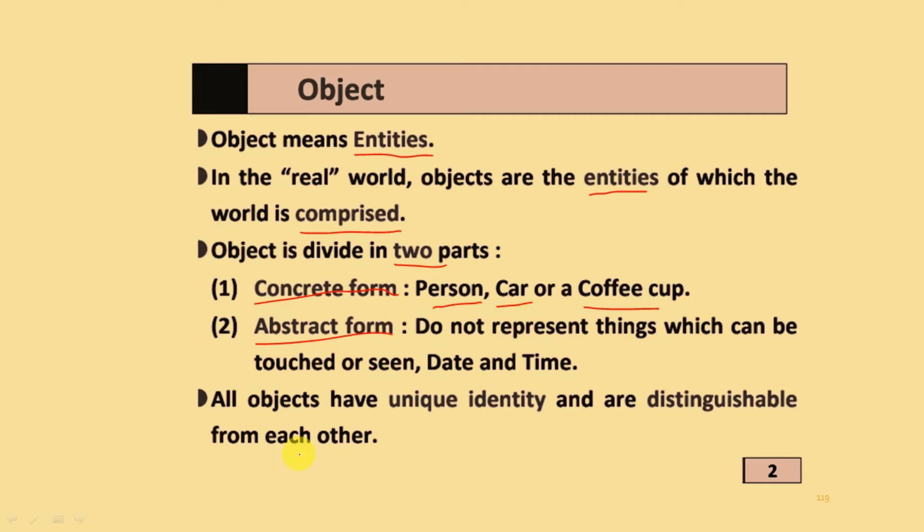Abstract form means do not represent things which can be touched or seen, like date and time. All objects have unique identity and are distinguishable from each other.